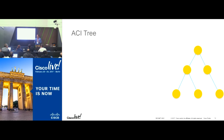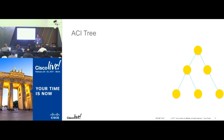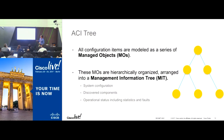In the REST world, you need to understand what a managed object is. Every object you create in ACI is represented as a managed object — a tenant is a managed object, a BD is a managed object, an application profile is a managed object. All these objects are arranged hierarchically in a tree called the Management Information Tree. Every object has a parent-child relationship — a BD should be under a tenant, an application profile should be under a tenant, and so on.